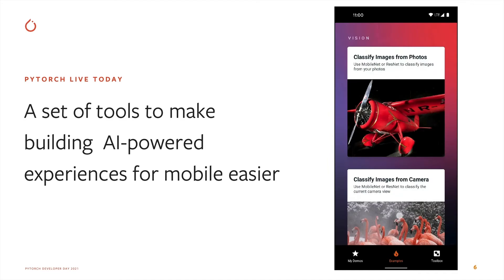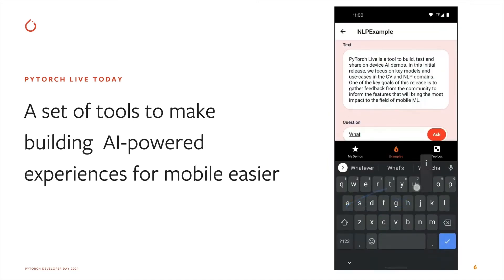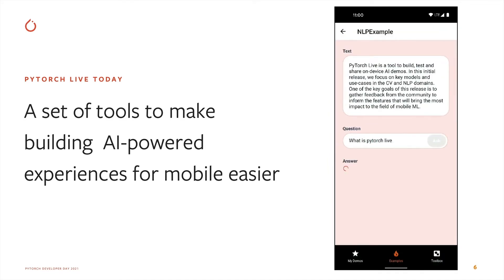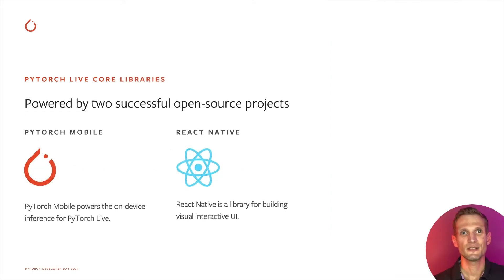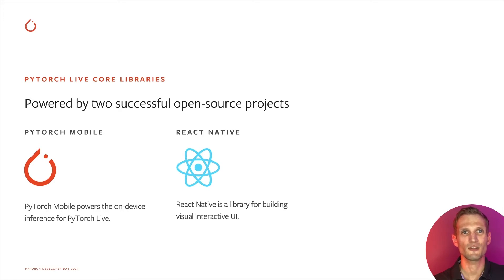Instead of having to write the same app twice in two different programming languages, PyTorch Life uses JavaScript as a unified language to write apps for both platforms. To achieve this, PyTorch Life is powered by PyTorch Mobile and React Native. PyTorch Mobile powers the on-device inference. React Native is a best-in-class JavaScript library for building visual interactive user interfaces for Android, iOS, and other platforms. Both are active and flourishing open source projects with tons of examples and tutorials.